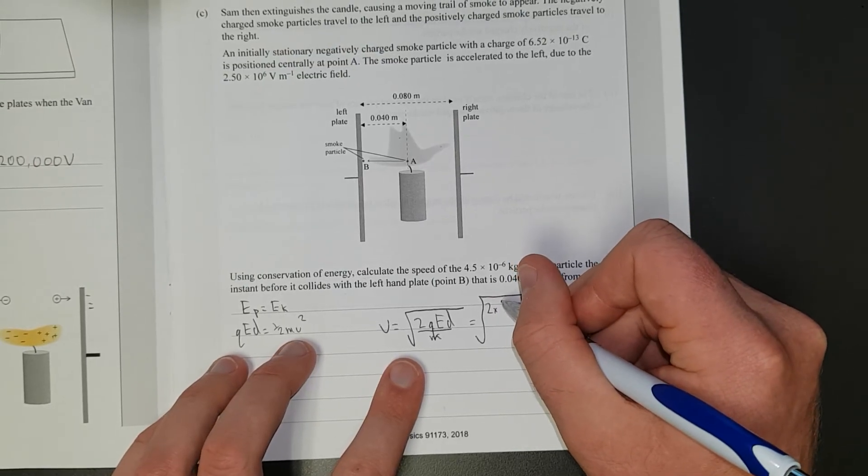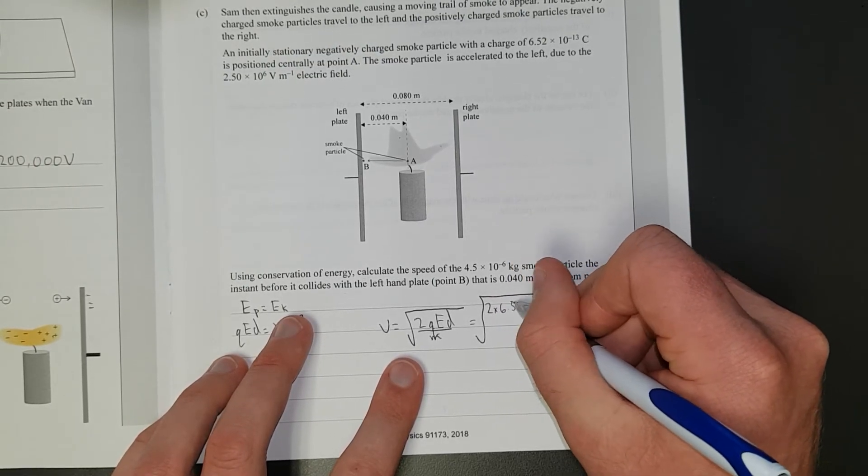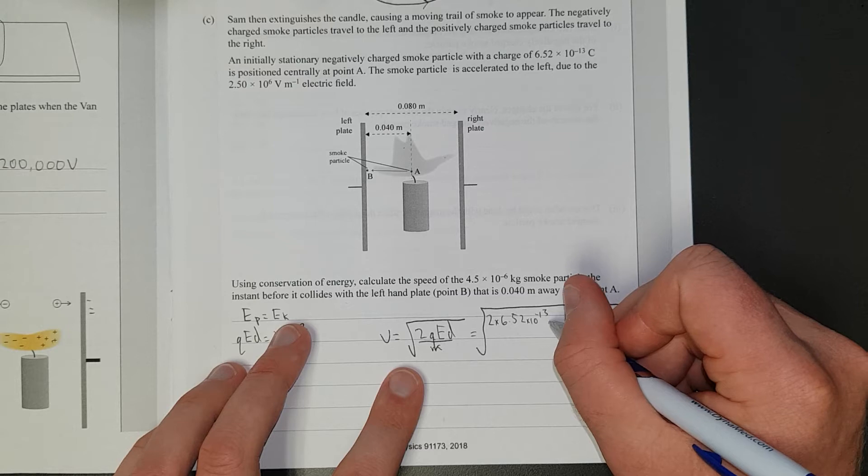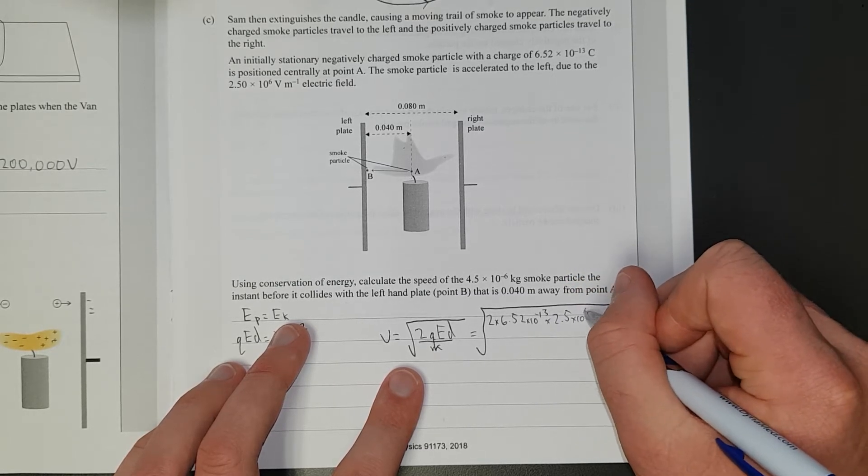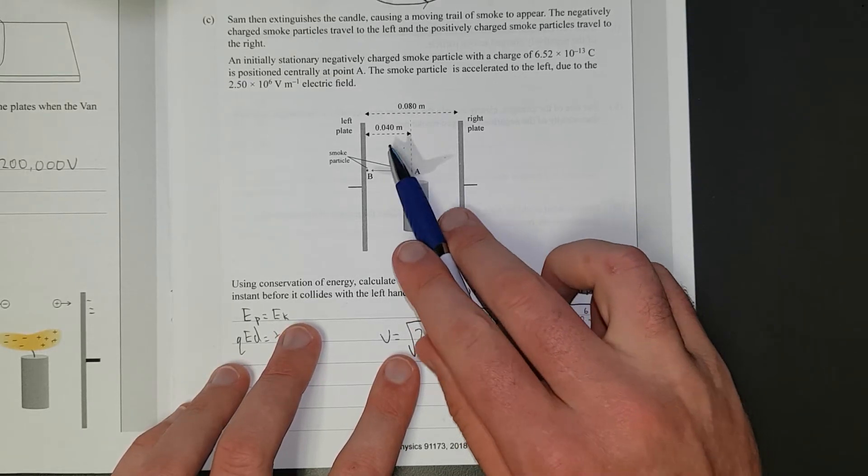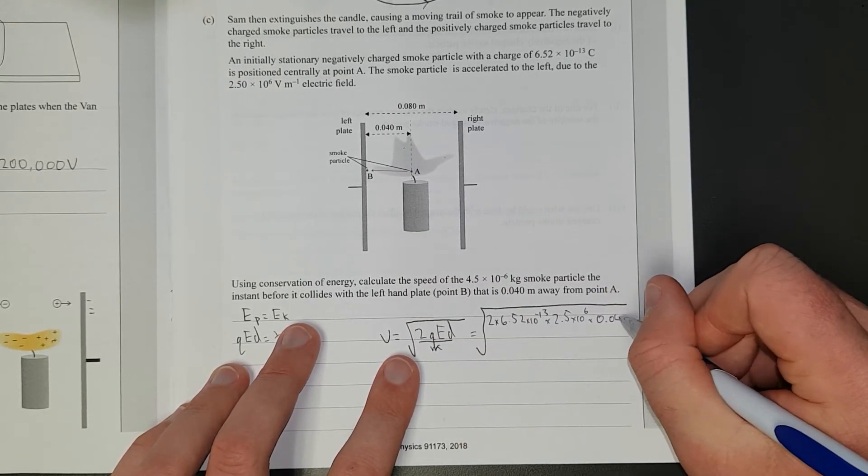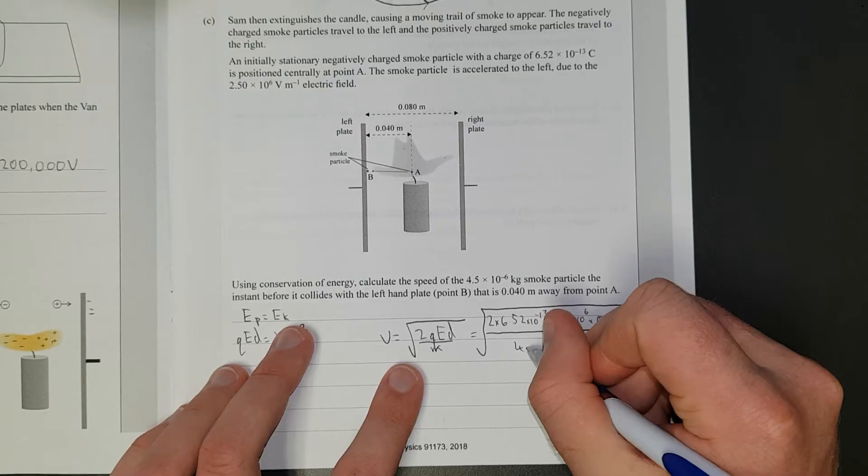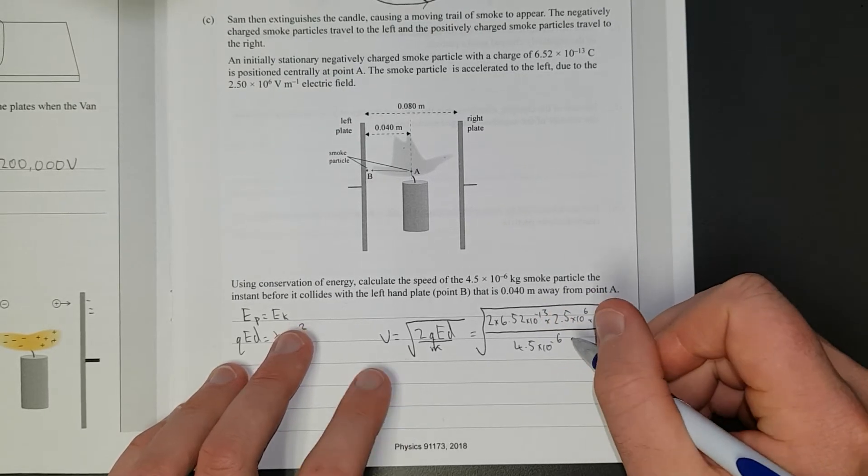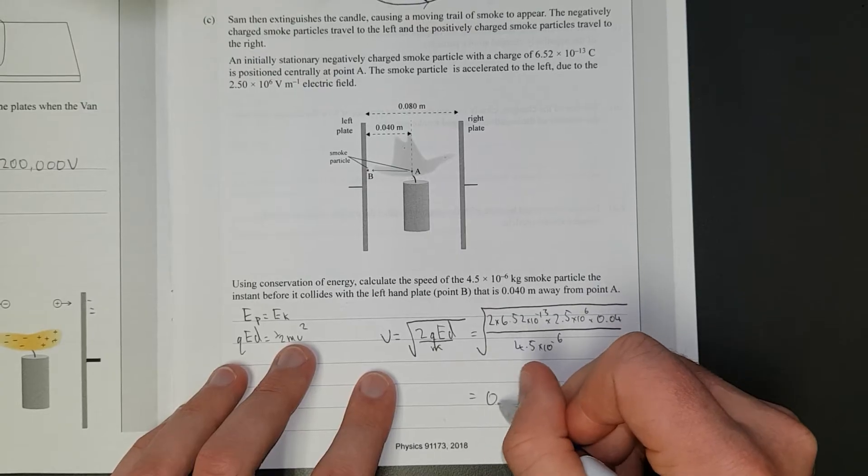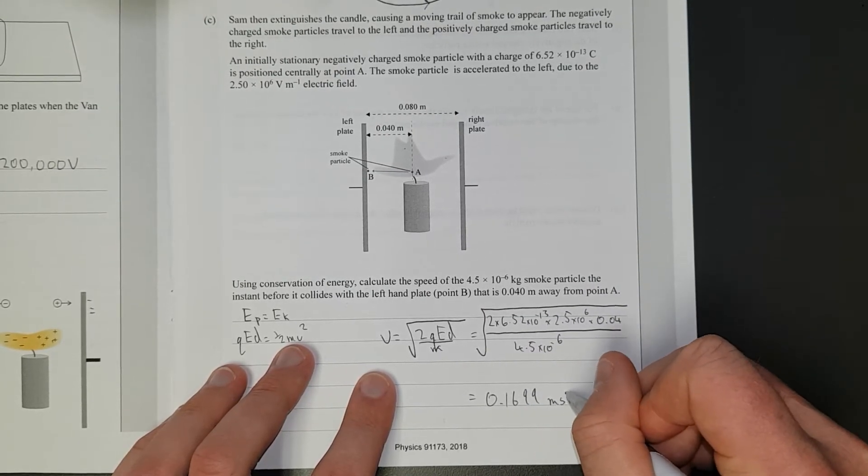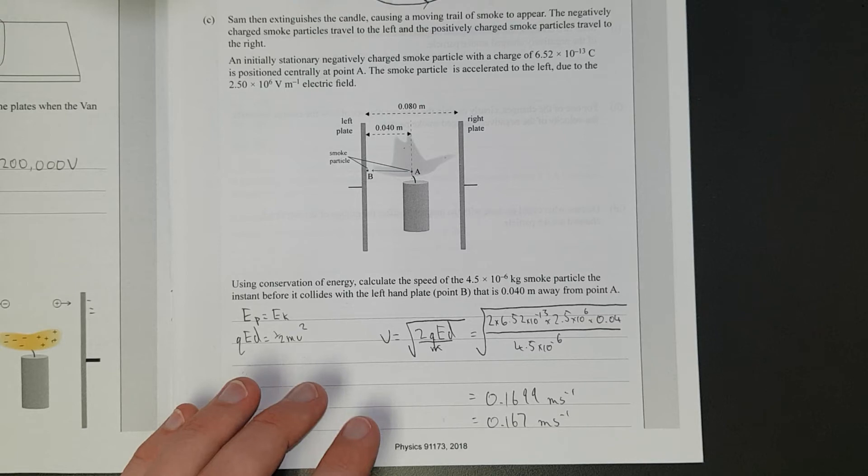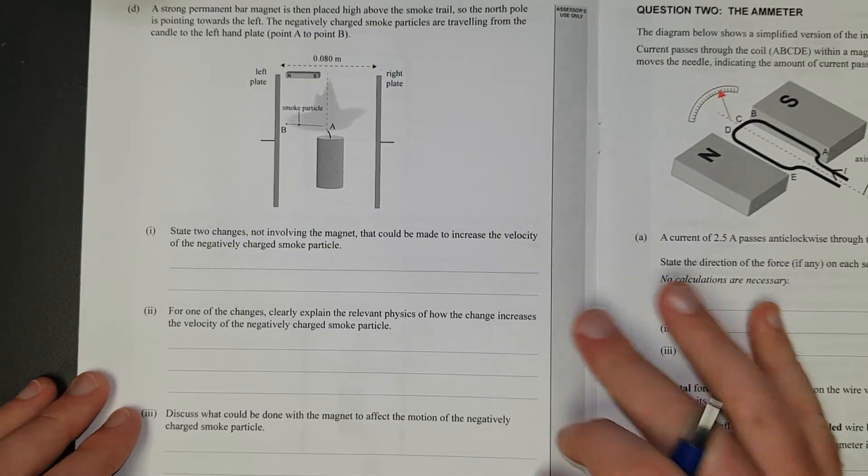2 times, what is the charge? The charge is 6.52 times 10 to the negative 13. The electric field is 2.5 times 10 to the 6. The distance is 0.04, divided by the mass is not very big, 4.5 times 10 to the negative 6. And that is all equal to, when you plug that into calculator, 0.1699 metres per second. In other words, 0.167 metres per second. There we go.